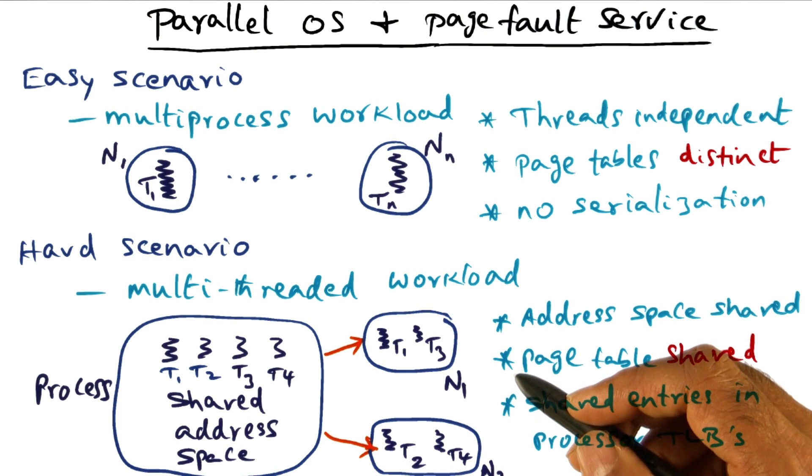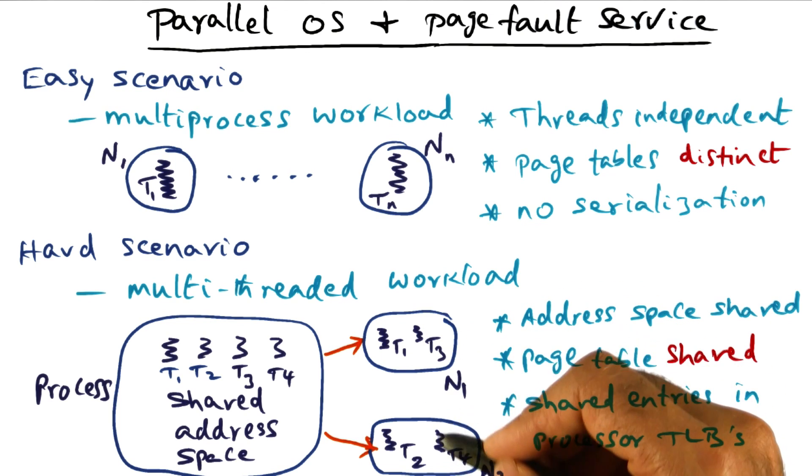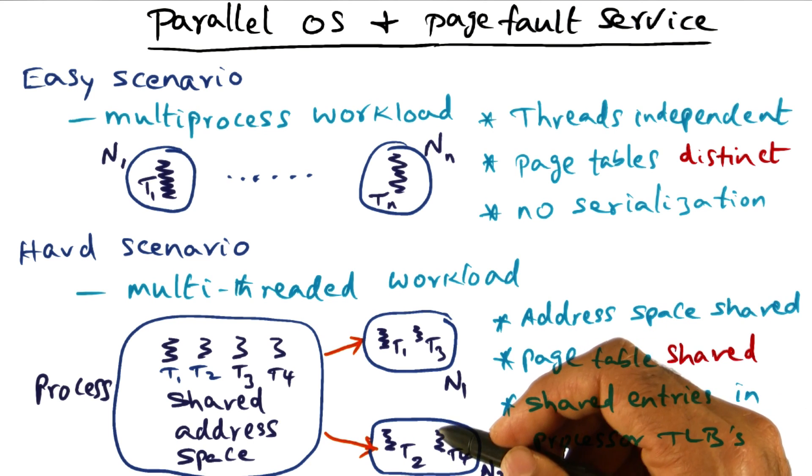What we would want is the operating system data structures that T1 and T3 have to mess with should be distinct from the operating system data structures that T2 and T4 may have to mess with. That will ensure you can have scalability.